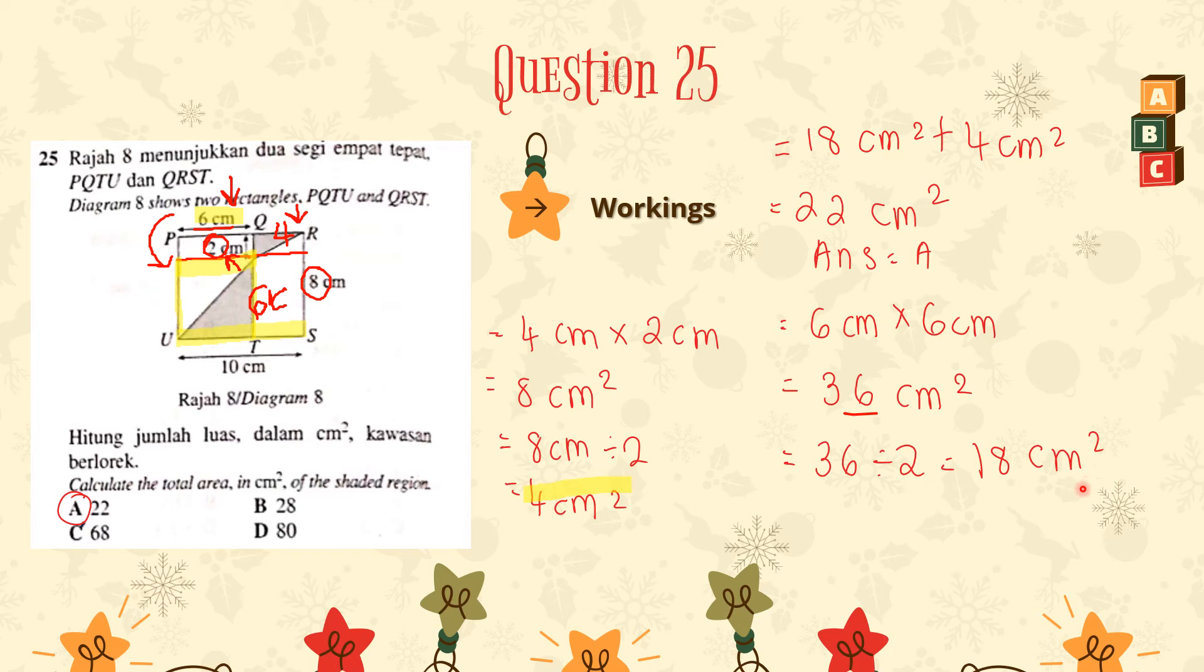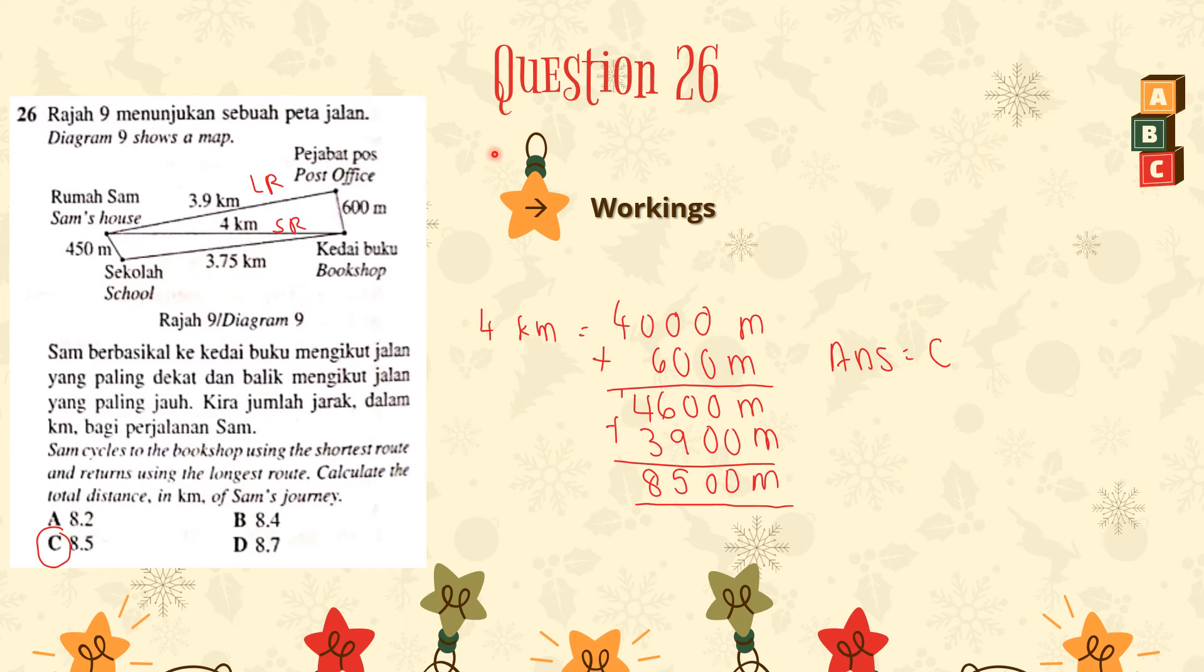But it does not end here. It is because they want the total area. So we have to plus both of them. So 18 cm² plus 4 cm², we will get 22 cm². So we know the answer is A. 22 cm². The answer is A.